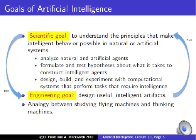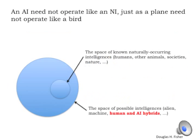The scientific goals of understanding principles of intelligence by looking at natural systems and the engineering goals of building intelligent systems are highly interrelated with feedback between them. We understand principles, use those principles to build AI systems, and then those AI systems themselves become artifacts that we can study and experiment with. Poole and Mackworth also draw an analogy between thinking machines and flying machines — an artificial intelligence need not operate like a natural intelligence, just as a plane need not operate like a bird.